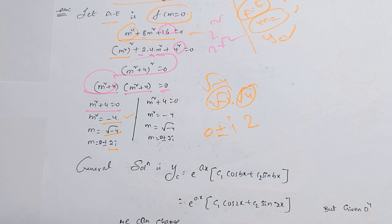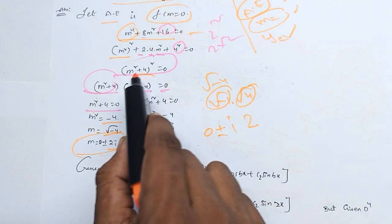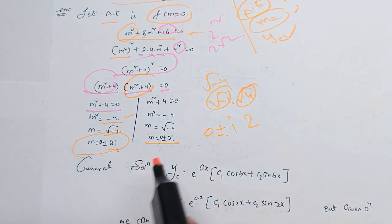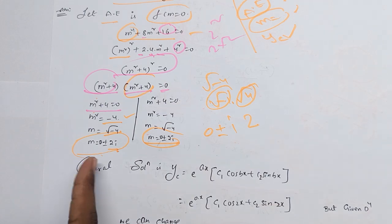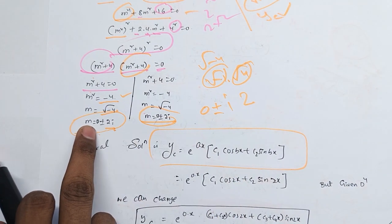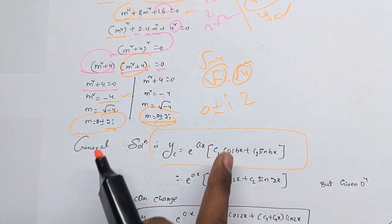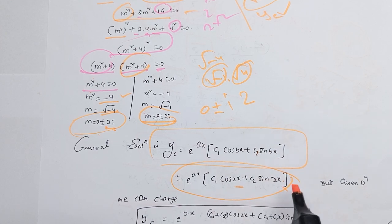So we get a plus — m square plus 4 equals minus 1. Then 0 plus or minus 2i. First value is 0 plus 2i, and the other value is the same. If you observe the technique — same value, same value. The formula is: y is equal to e^(0x) times c1 cos(2x) plus c2 sin(2x). The answer is there.